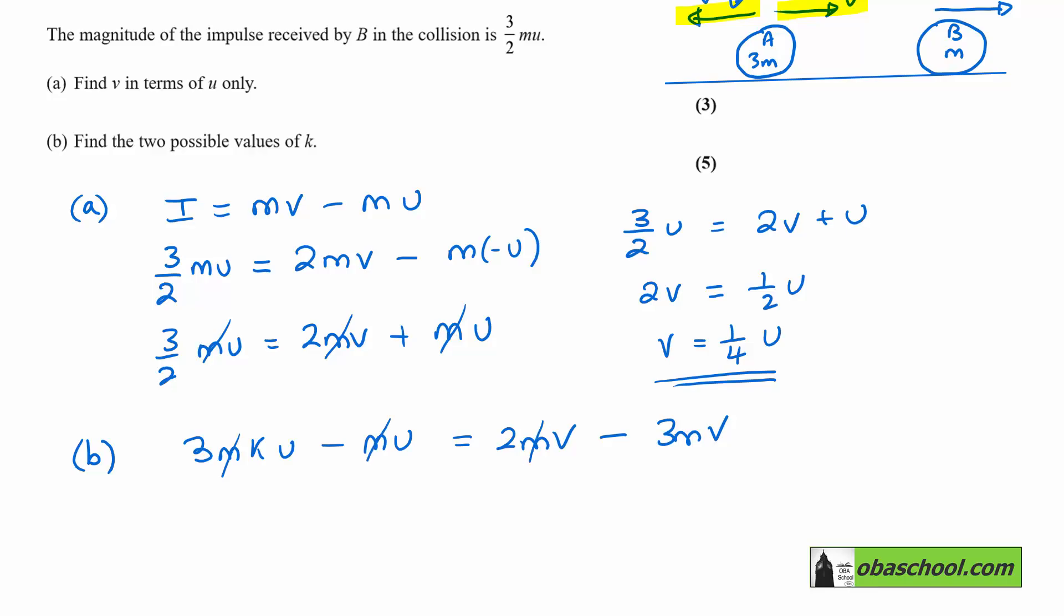So that gives us—let's first get rid of the m's throughout. 3KU take away U equals twice—now we know from the first part that V is 1/4 U, so that's going to be U/4 take away 3U/4.